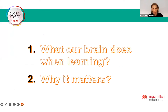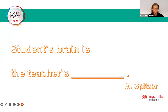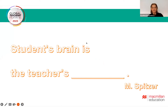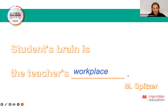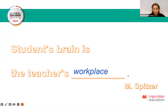So that's it. We talked about what our brain does when learning: it makes effort, and it's very selfish about that effort. And now the final question — why does it matter? Spitzer wrote that the student's brain is the teacher's workplace. That answers why it matters: at the end of the day, it is our job, and this is where we work. Thank you very much for your attention.